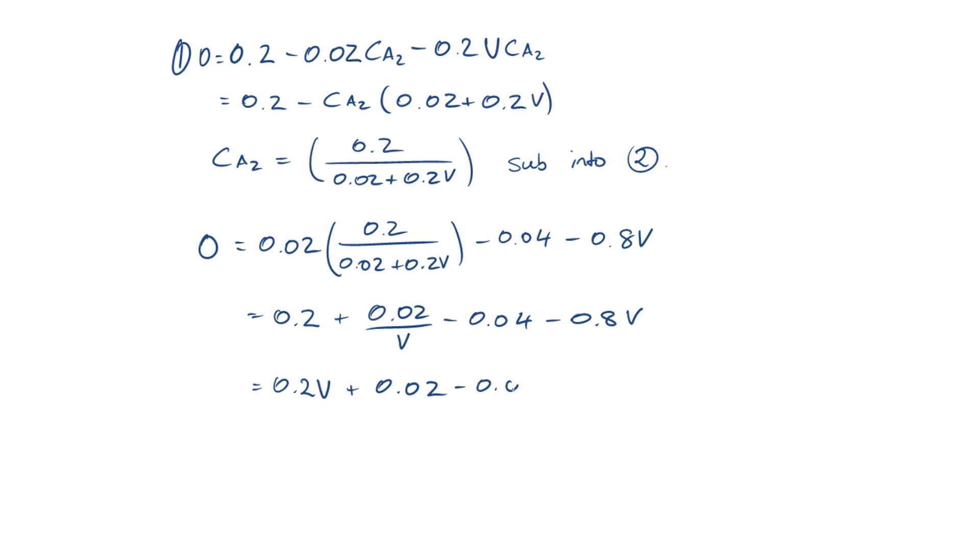So what we have now is a quadratic equation in terms of V squared and V. So if we rearrange and combine those terms, we have 0 equals negative 0.8 V squared minus 0.16 V plus 0.02.